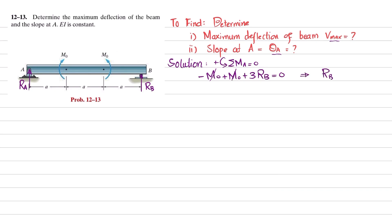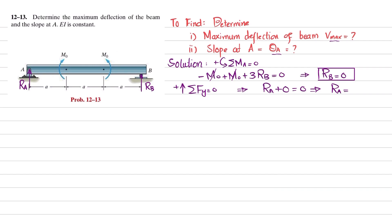The M₀ terms cancel, giving Rb = 0 — there is no reaction force from the roller support. Now finding Ra using the vertical equilibrium condition: Ra + Rb = 0, and since Rb = 0, Ra is also zero. So both supports offer no reaction forces.